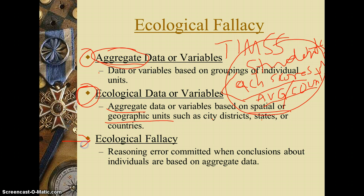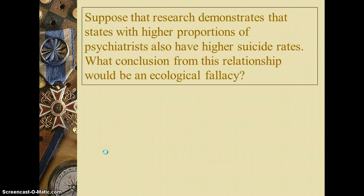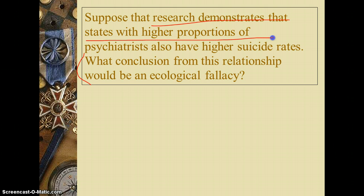The problem comes when we try to draw conclusions about individuals based on aggregate data — it's essentially a reasoning error. Let me give a more direct example, not one involving countries and averages at that level, but something a little more specific. Suppose that research demonstrates that states with higher proportions of psychiatrists also have higher suicide rates. What conclusion from this relationship would be an ecological fallacy? Pause if you need to think about it.